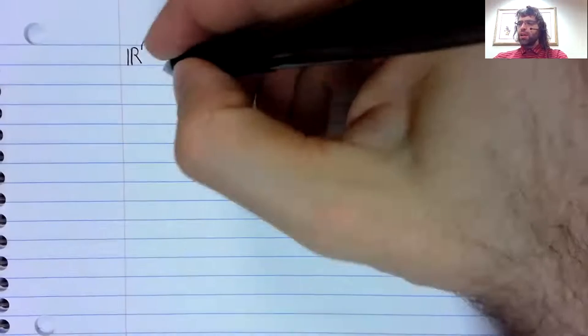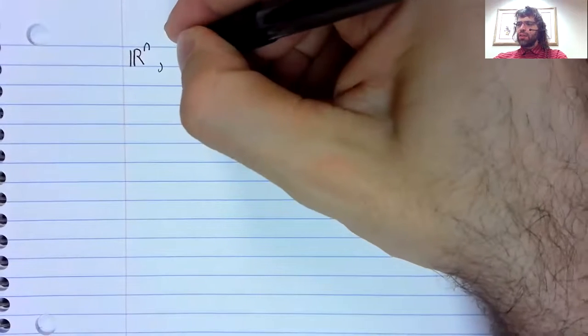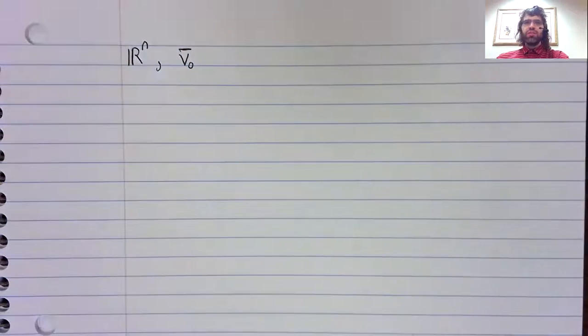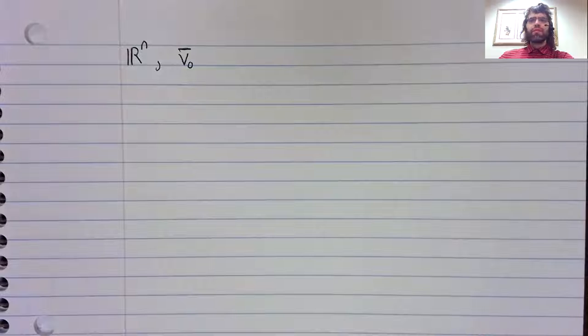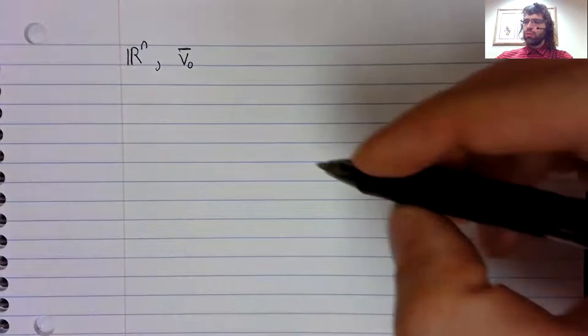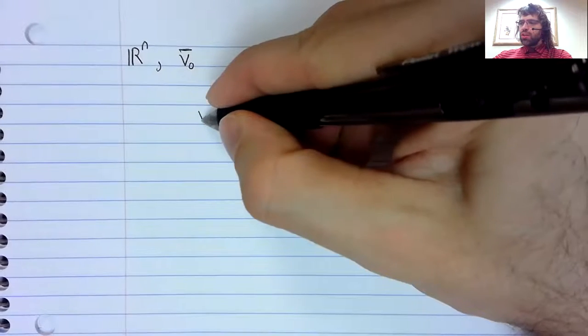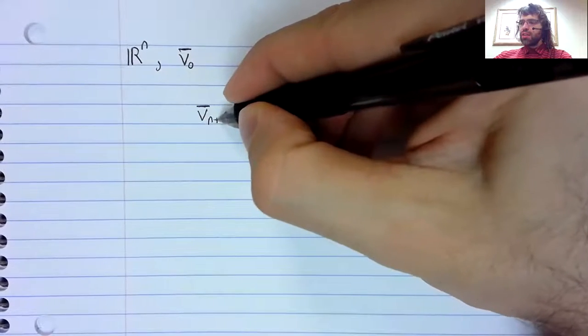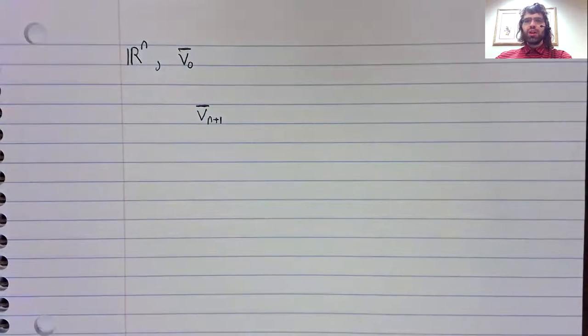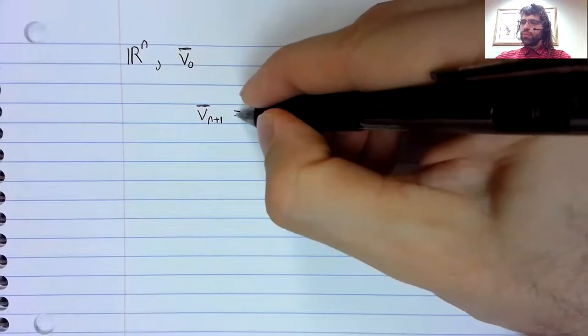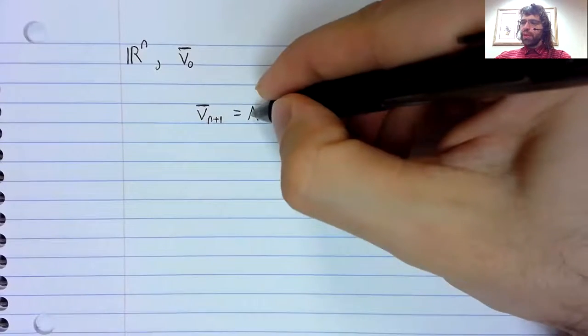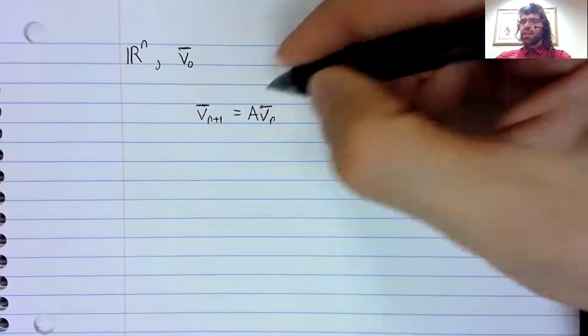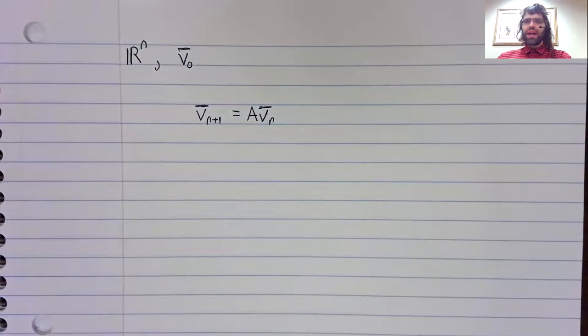You're in R_n, and you've got some initial vector V_0, and then you define V_{n+1} as some matrix A times V_n.